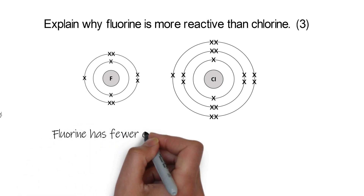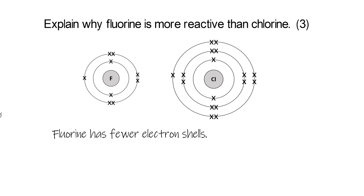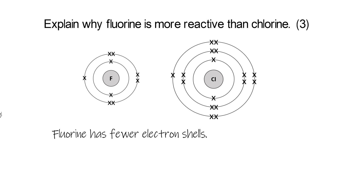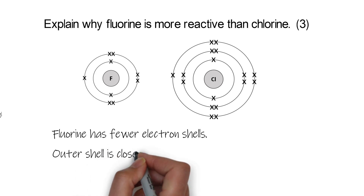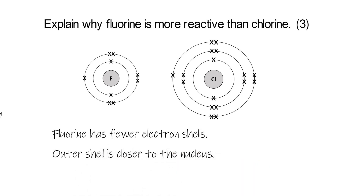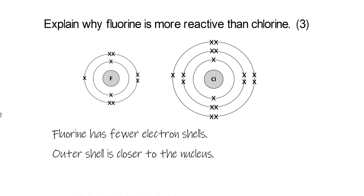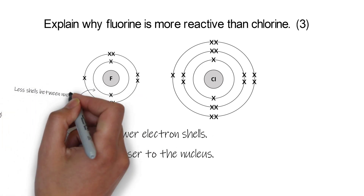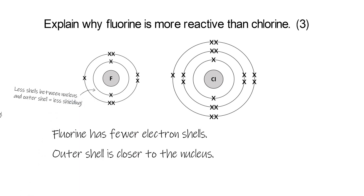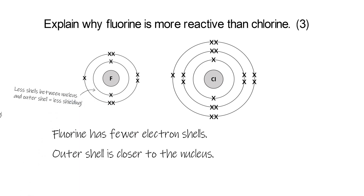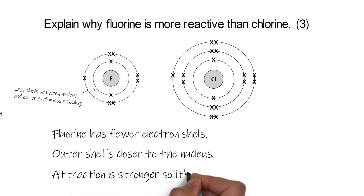So looking at these two atoms, fluorine is a lot smaller because it's got fewer electron shells. That means that the outer shell, where it's trying to pull that electron into, is going to be closer to that positive nucleus. There's less shielding in fluorine because there are fewer shells in between the nucleus and the outer shell. Both of those things mean the attraction between the nucleus and the electron you're trying to pull in is going to be stronger in fluorine, so it will be easier to gain an electron.